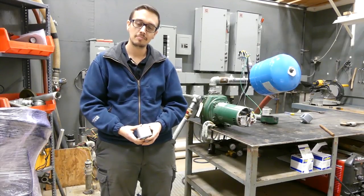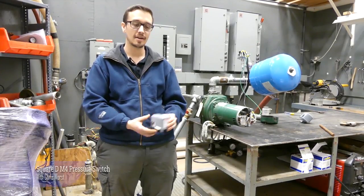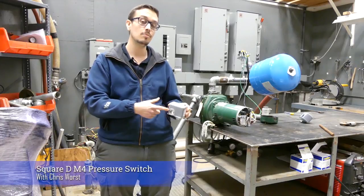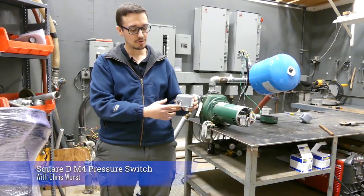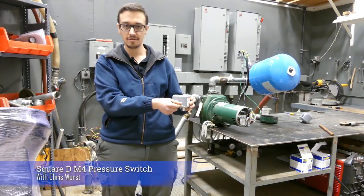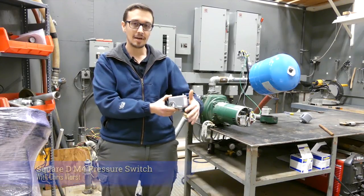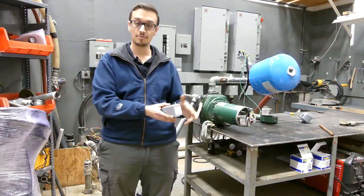Hey, Chris with RC Worst here. Welcome back to another great video. Today we're talking about the Square D M4 pressure switch and what's nice about it is this fancy little arm on it, which might be different than the pressure switch you're familiar with.